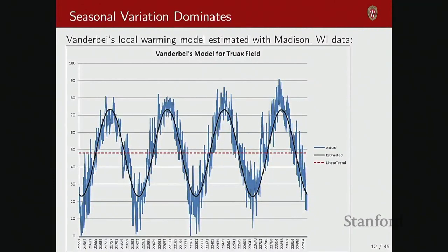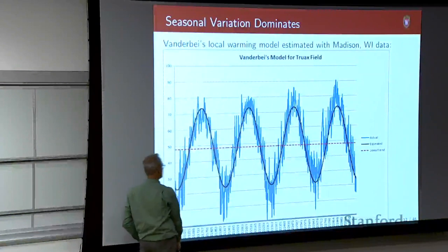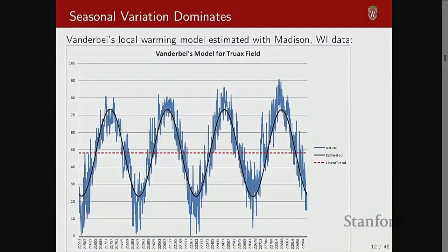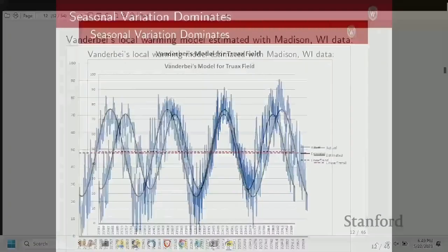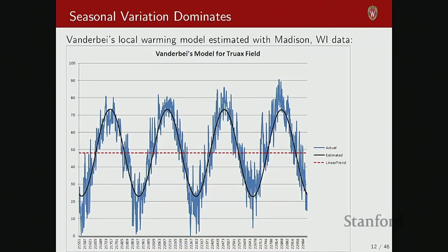The seasonal variation dominates — this is a local warming model estimated with Madison data. The black line is the estimated temperature change; the blue line shows actual variations over these years; the red line shows the linear trend from the climate estimation. So that's what integrated assessment is: a framework where you can make simple assumptions about temperature response to climate, pour in assumptions about damages, GDP growth, and population growth, and assess what damages are induced in the future by activities today.